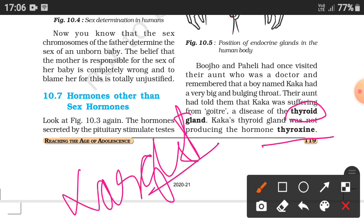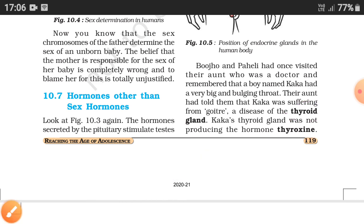The thyroid gland produces thyroxine. If the thyroid gland is defective, it can be either underactive or overactive — both too much and too little are harmful. We need an optimal level. Many doctors recommend that you check your thyroid levels regularly.